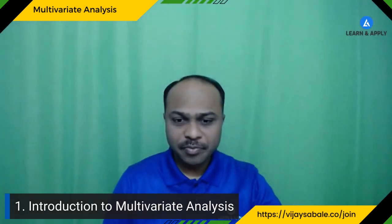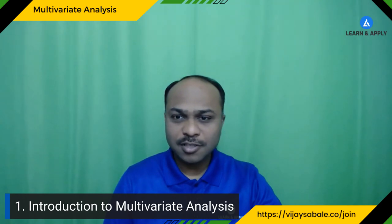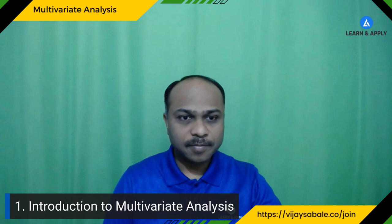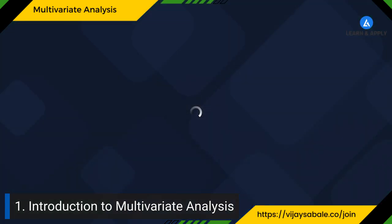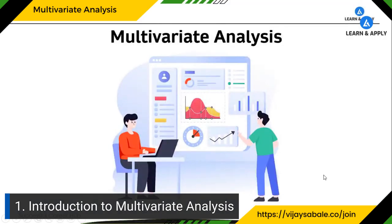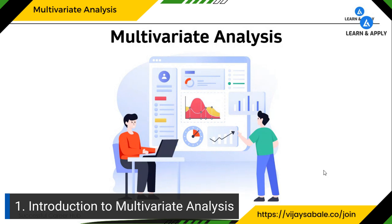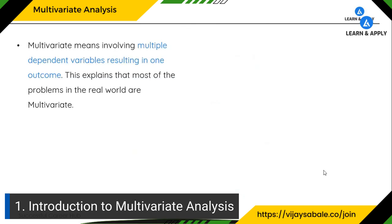Let me share my screen. Can you see it? Great. So today's topic, as already explained, is multivariate analysis — you can see in the picture that we are studying multiple factors at one time. Multivariate means involving multiple dependent variables resulting in one outcome. That one outcome or result is the product of many dependent variables. This explains that most problems in the real world are multivariate.